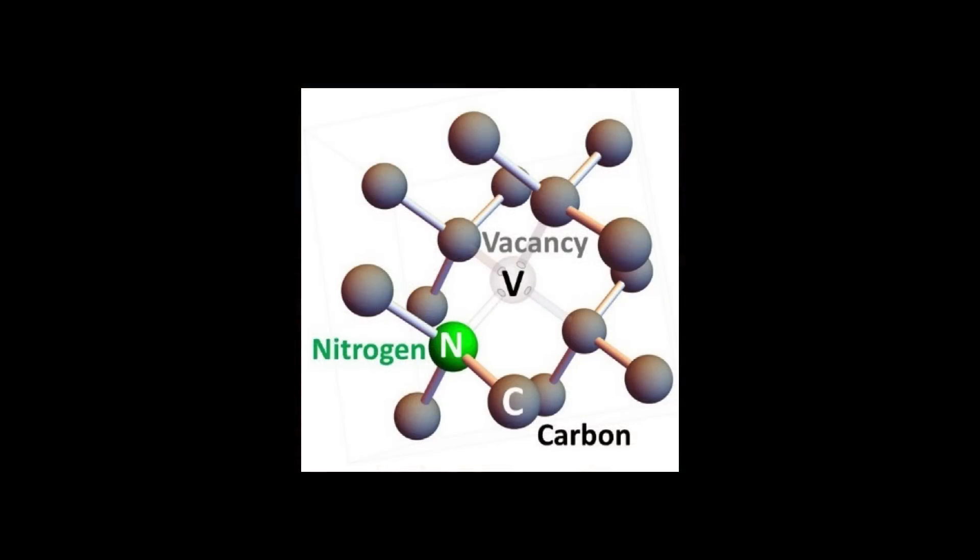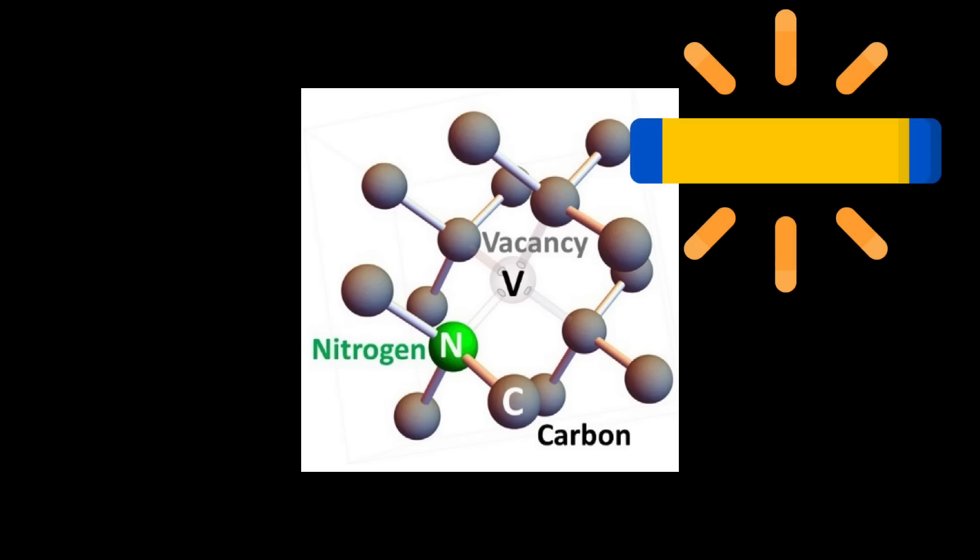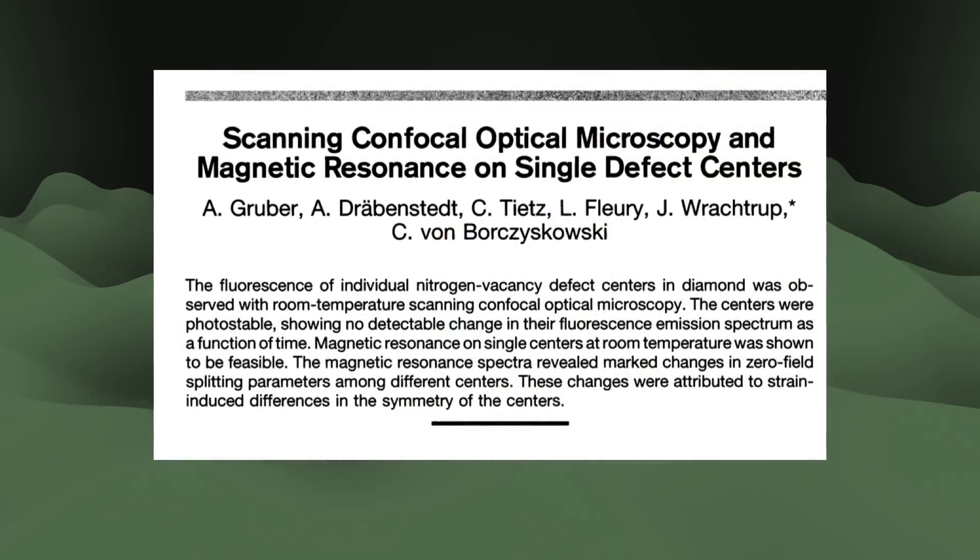But this is where we mix in the second big thing. Fluorescence. We can actually get information out from our NV negative center qubit via ordinary optical light. We can see the quantum, bro. In 1997, a team of scientists in Germany announced that they could see and track the NV negative center's spin transitions at room temperature. This was an earth-breaking, ground-shattering result at the time.